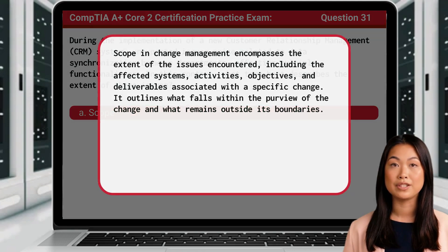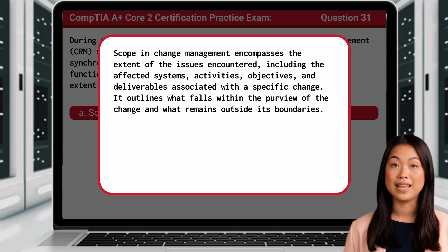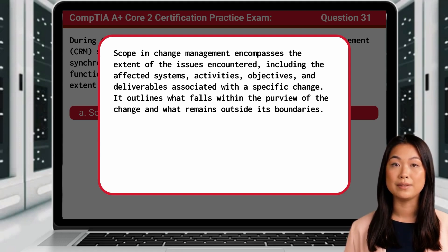Scope in change management encompasses the extent of the issues encountered, including the affected systems, activities, objectives, and deliverables associated with a specific change. It outlines what falls within the purview of the change and what remains outside its boundaries.